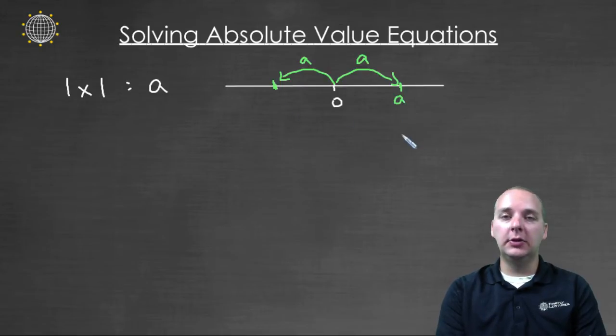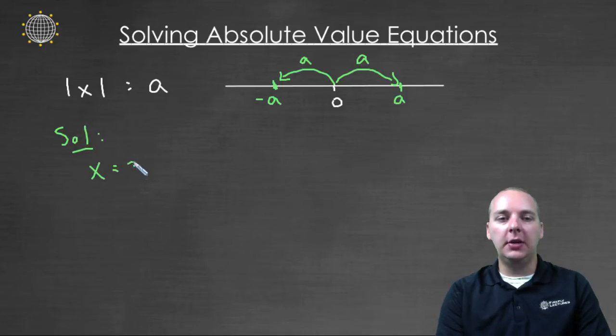To the right of zero, we would get a solution of a, and to the left of zero, we'd get a solution of negative a. So this has two solutions: x could either be a or negative a.